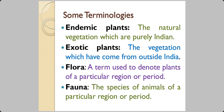When we say flora, we use the term to refer to all the plants of a particular period and particular region — not some other region, not some other period, and not some extinct plant either. Similarly, for animals we use the term fauna, which means the species of animals of a particular region or period.